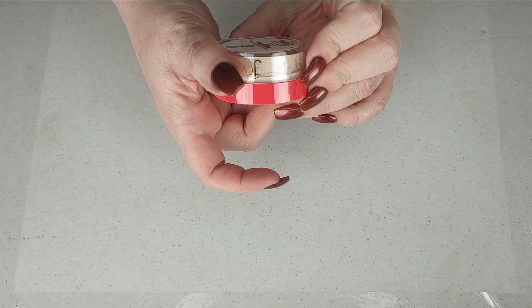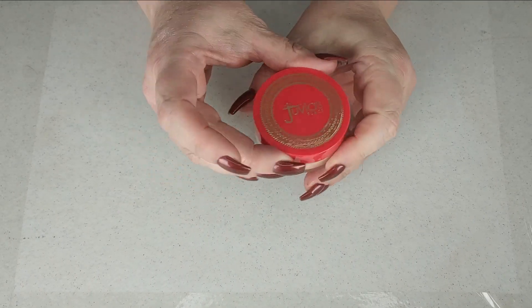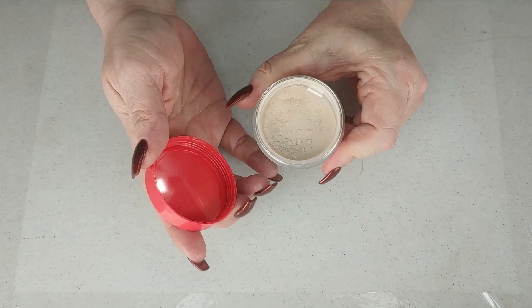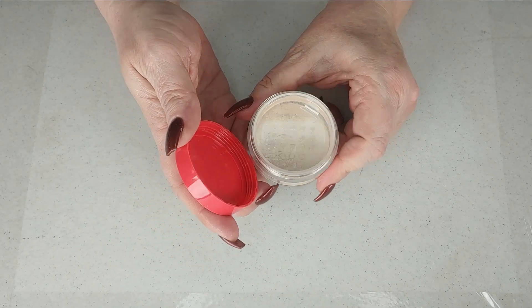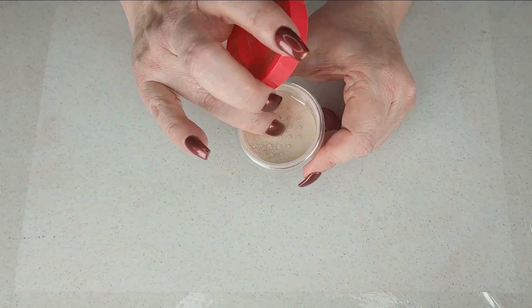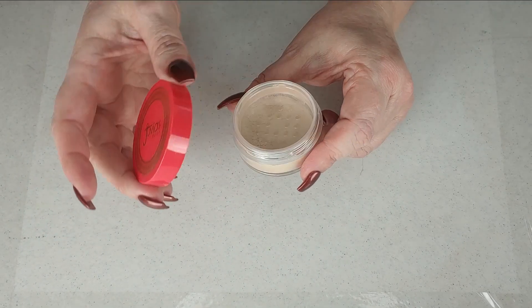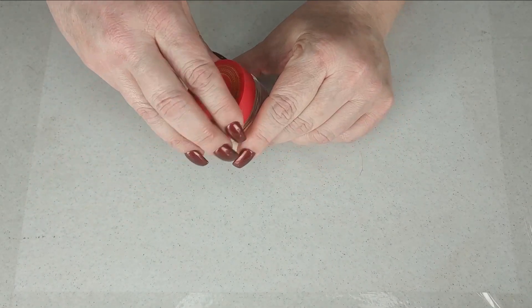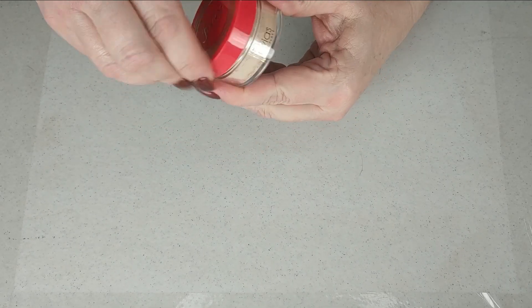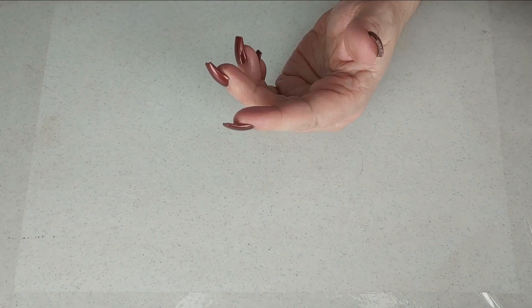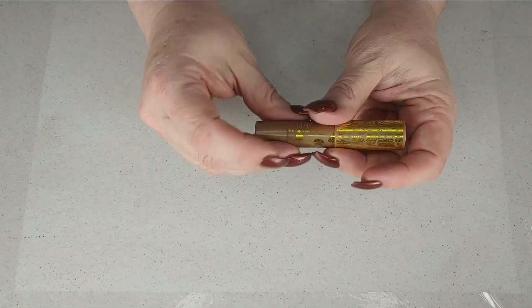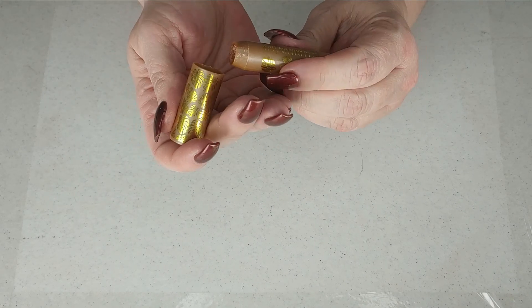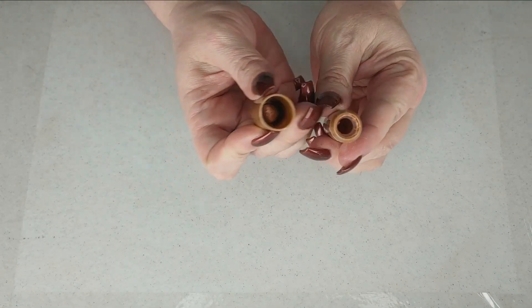And then I just recently got this and this is in the shade Clio and this is the Nubian loose highlighter by Juvia's Place. I just got this so I have not used it yet, it is still sealed and I probably won't open it for a little while because I have other ones that are like this that are open. It might be a little bit darker than the KAB but it's really pretty. I'm gonna keep that.